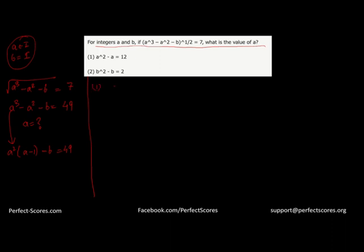Let's use statement 1 which says A² - A equals 12, which means A times (A - 1) equals 12. From here we can substitute A times (A - 1) equals 12 into this equation. So this equation can be rewritten as A times A times (A - 1) minus B equals 49. This becomes 12A - B equals 49.